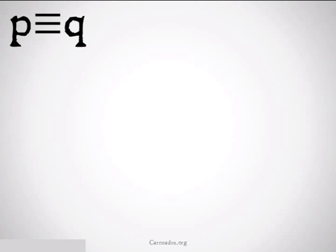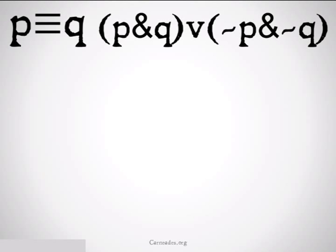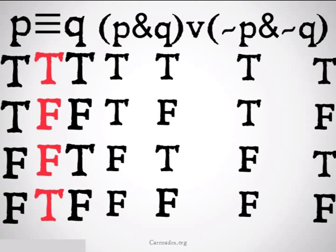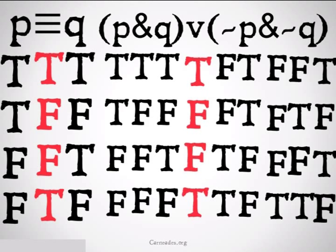We also have P triple bar Q. Therefore, (P and Q) or (not P and not Q). We fill in our truth tables below and we see, once again, they are true and false in the same situations. So they're replaceable — salva veritate.